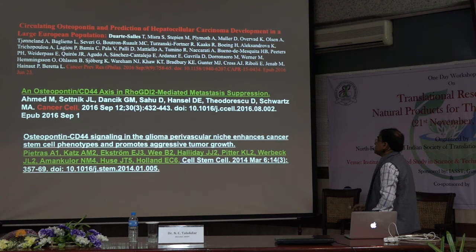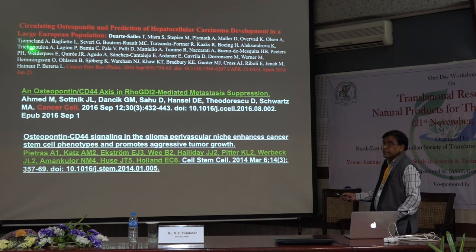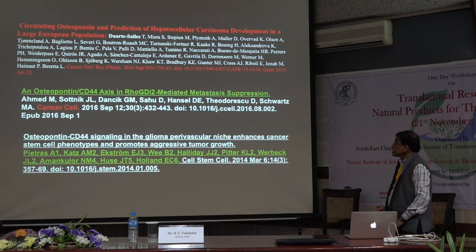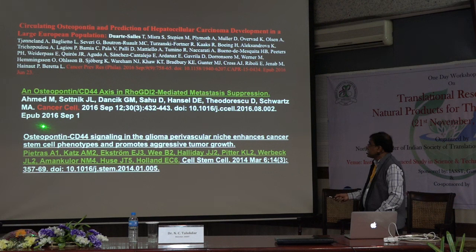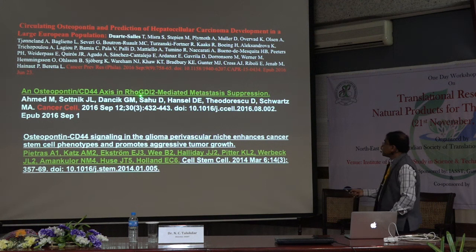There are a lot of papers coming in this field. For example, recently a study of about 500 patients with a large European population showed that circulating osteopontin is a predictive marker in hepatocellular cancer — liver cancer. Similarly, one of my former PhD students — now he moved to Yale University, Connecticut, USA — recently he and his postdoc boss published a paper in Cancer Cell last year showing that the Osteopontin-CD44 axis is RhoGDI2-mediated and plays an important role in metastasis suppression.